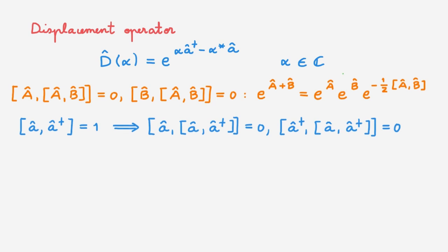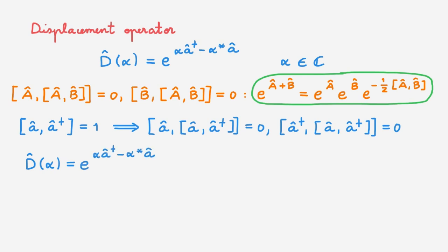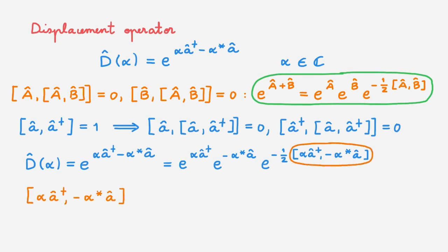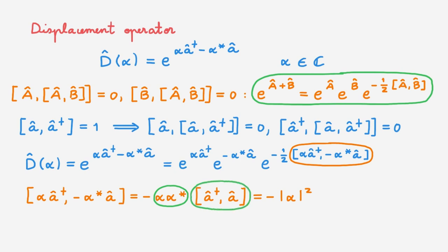This means the conditions under which the Baker-Campbell-Hausdorff formula is valid apply in our case, and we can therefore write the displacement operator — originally defined as the exponential of a sum — as the exponential of the first term times the exponential of the second term times the exponential of minus one-half times their commutator. Focusing on this commutator, we simplify by taking the scalars outside: the product gives |α|², and the commutator of A and A† equals minus one, so we end up with |α|².